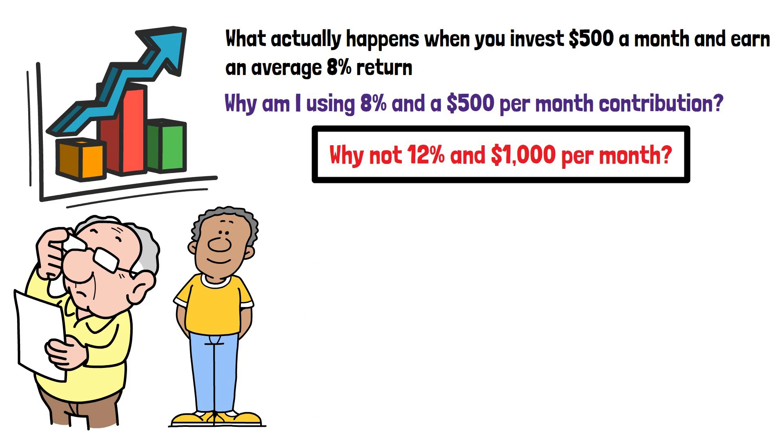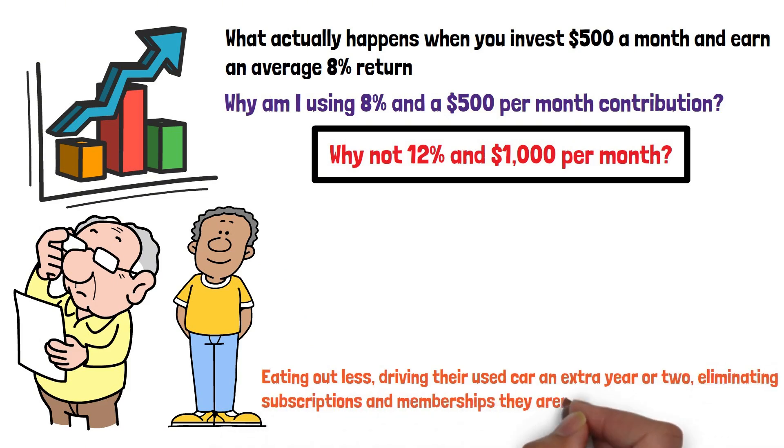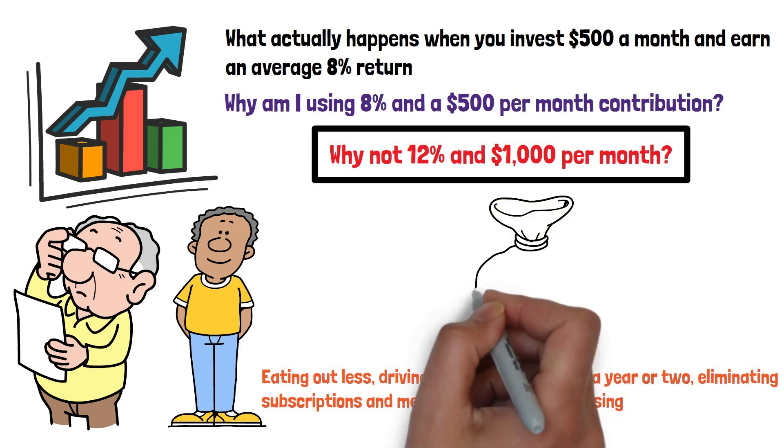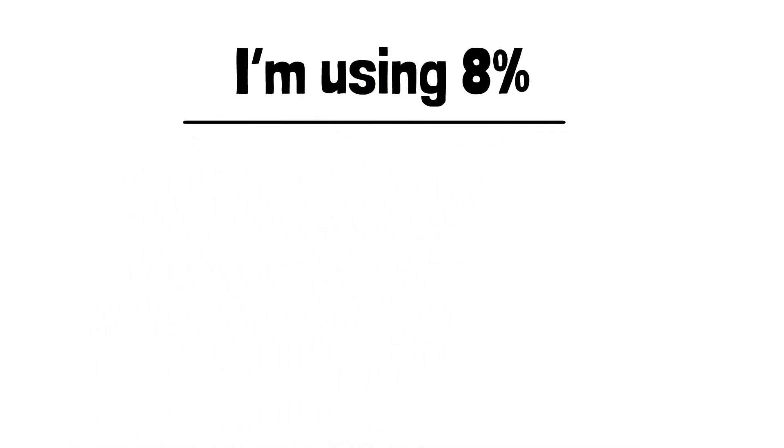Most people can save $500 a month by eating out less, driving their used car an extra year or two, eliminating subscriptions and memberships they aren't using, and investing their windfalls, tax refunds, raises, and bonuses.